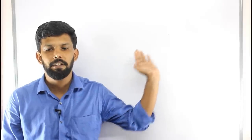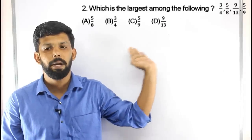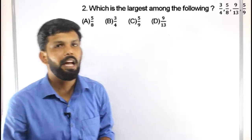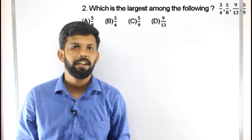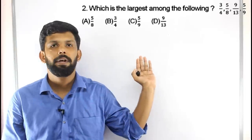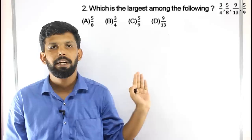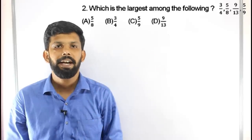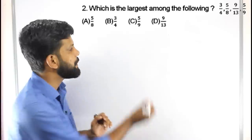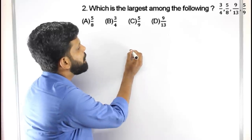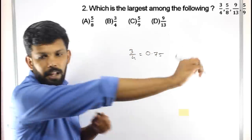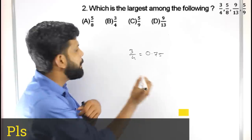The second question is: which is the largest among the following fractions — 3/4, 5/8, 9/13, 5/9? We have 4 fractions. We will convert each to a decimal: 3/4 = 0.75, 5/8 = 0.625.